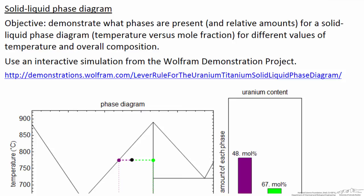In this screencast, I'm going to describe a solid-liquid phase diagram. This is for two components, titanium and uranium, and indicate which phases are present and the relative amounts of those phases at different conditions of temperature and mole fraction of uranium. I'm going to demonstrate this using an interactive simulation from the Wolfram Demonstration Project, and I've given the link here.